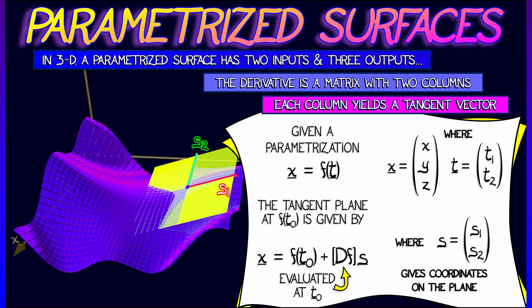And what's happening is that the two columns of the derivative are being multiplied on the left. You're hitting those two parameters, s1 and s2, and that's telling you how far you're going along each tangent vector along the two columns of the derivative.